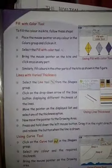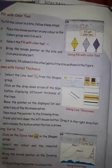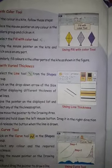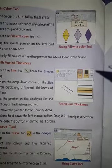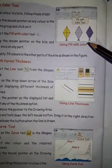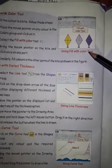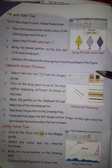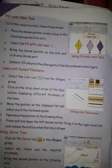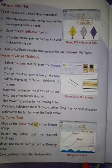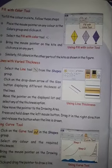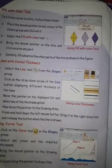The Fill with Color Tool is used to fill color on your drawing. Next, the Line Tool is used to draw straight lines of different thickness. Using the Line Tool, you can draw straight lines of different thickness.